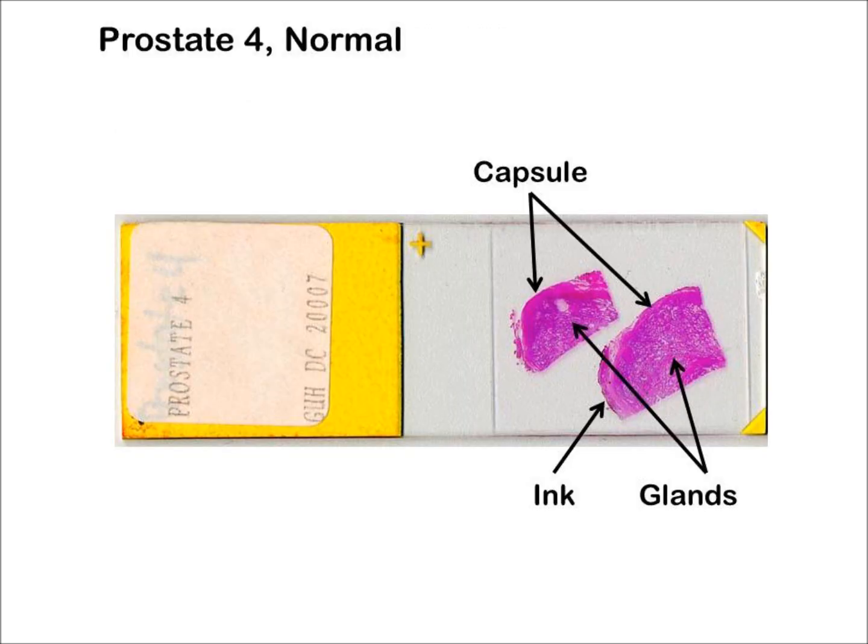Place the slide labeled Prostate 4 on a piece of white paper and examine it by eye. Observe that it contains two sections derived from a radical prostatectomy. Note that there is a capsule of connective tissue on one edge and normal glands inside. In this slide, you will also observe a black dye along one of the edges. This is used to define the surgical margin, which is important for determining the spread of the tumor.